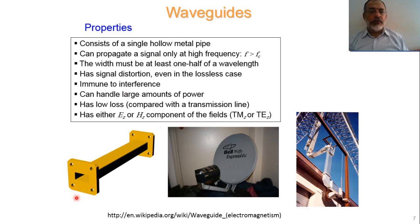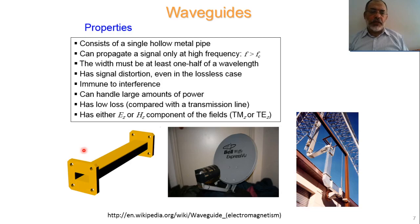Waveguides consist of a single hollow metal pipe or conducting pipe — for example, a plastic pipe coated with conducting material. We cannot see such waveguides at low frequencies. For a DC circuit, or even at 1 MHz, we don't see waveguides. This is because waveguides can propagate electromagnetic waves and deliver power only at frequencies greater than the cutoff frequency. Below the cutoff frequency, the waveguide cannot transfer electromagnetic energy.